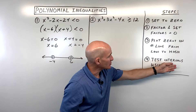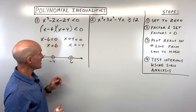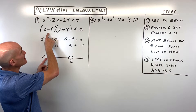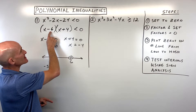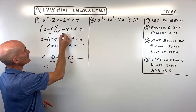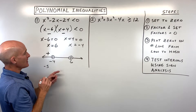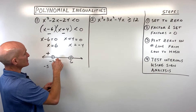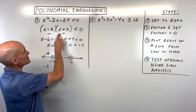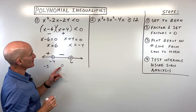Now we test the intervals using sign analysis — picking a test point in each of the three regions. Testing negative 5: negative 5 minus 6 is negative 11 (negative), and negative 5 plus 4 is negative 1 (negative). A negative times a negative is positive. Testing 0: 0 minus 6 is negative 6 (negative), and 0 plus 4 is positive 4 (positive). A negative times a positive is negative.